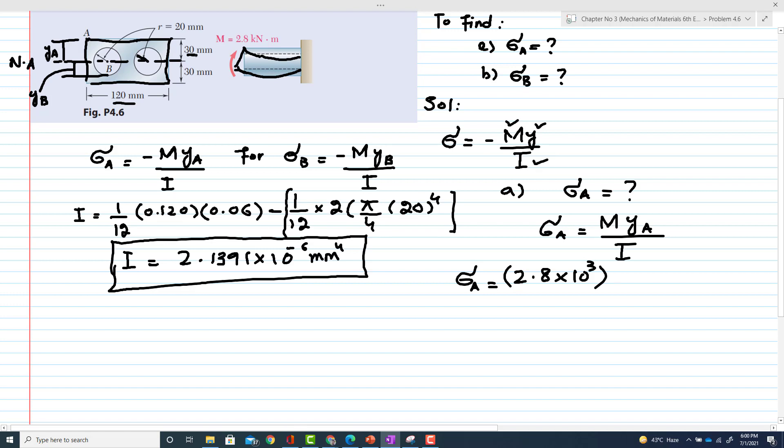Now you can see what is YA. YA is equal to 0.03 meters, because it is 30 millimeters. This is the distance from neutral axis to the point where you are interested to find the stress.